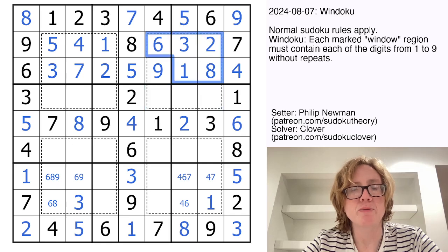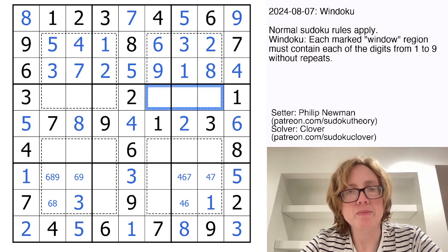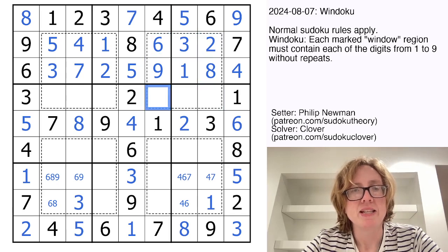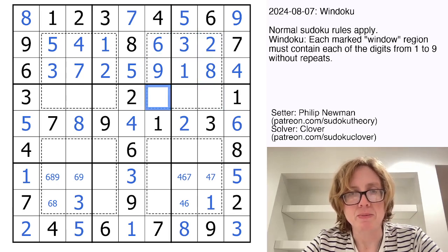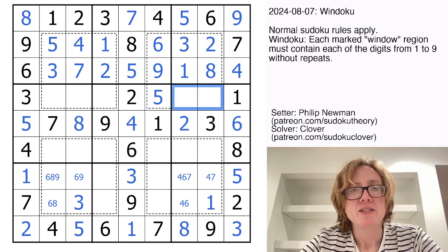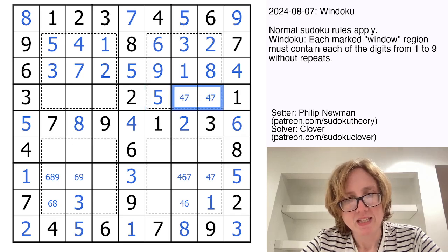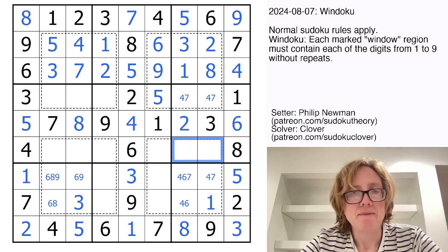Now to finish this Windoku region, I need three more digits. I need four, five, and seven. This one can't be four or seven because those appear in the column already. So these will be four and seven. And that makes these two cells a five and a nine, which resolve.